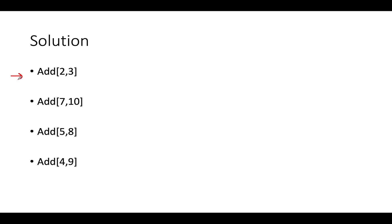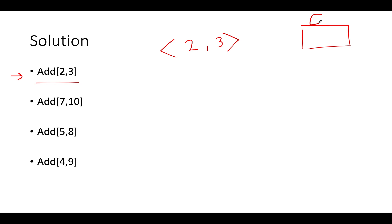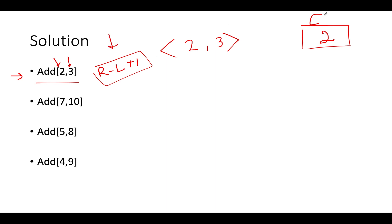The first element we see is [2, 3]. The TreeMap is right now empty, so we go ahead and add this entry into our TreeMap. Along with this, we'll also update the count variable. By default count was 0. Since we are adding a new interval, we update count using the formula right minus left plus one. So three minus two plus one gives you two. Therefore, the count gets updated to two.